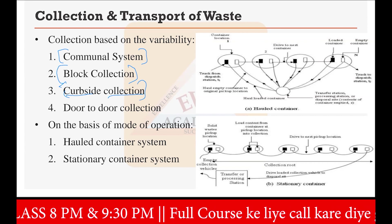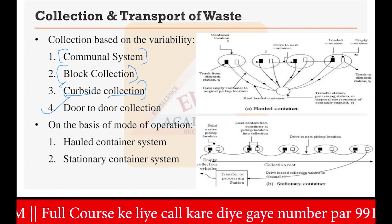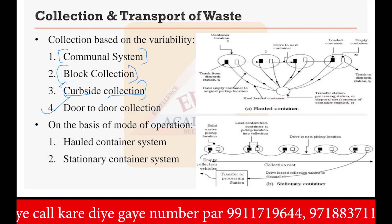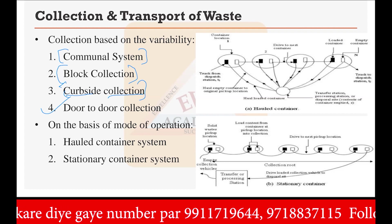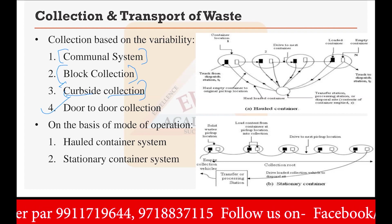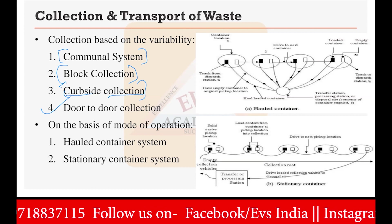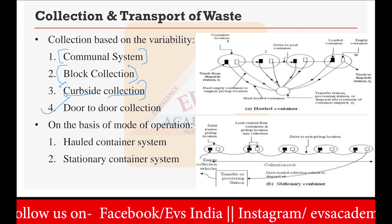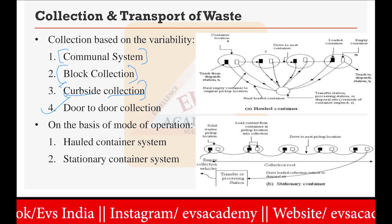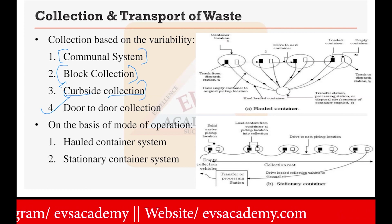The best option among all these collection methods is the fourth category, which is nowadays very popular, especially in cities — door-to-door collection. In door-to-door collection, the waste material is collected from each house's door and taken away to the disposal or management site. This is the first type of categorization of collection.